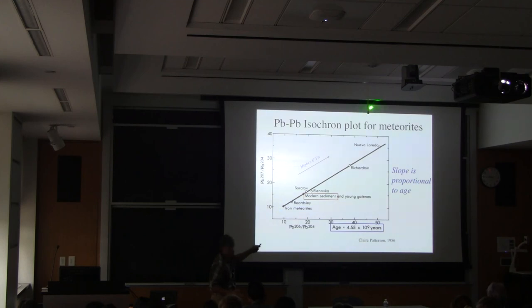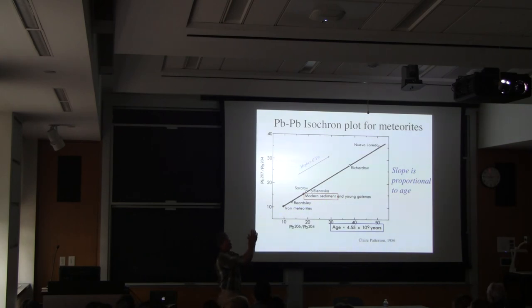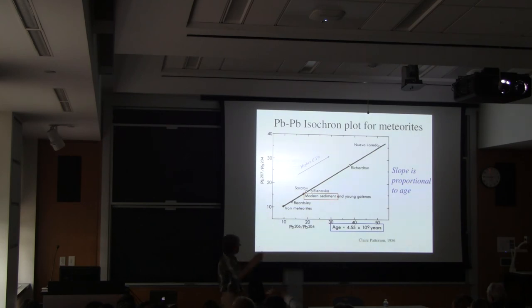The slope of the line would look something like this. If we were to come back in another billion years, the slope would look like that, and in another billion years it would look like that. So it's gradually changing in slope over time. If we measure that slope, we can calculate the age.